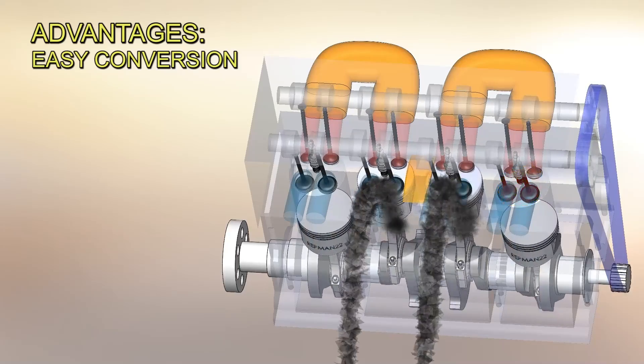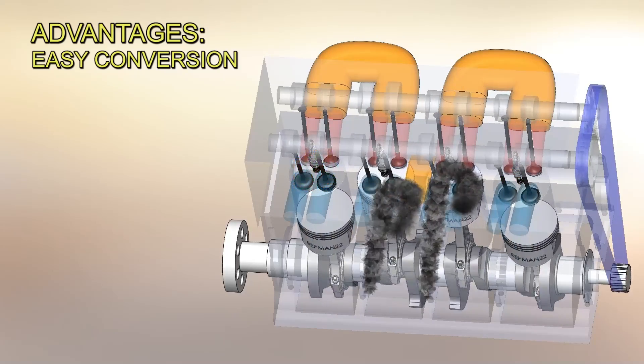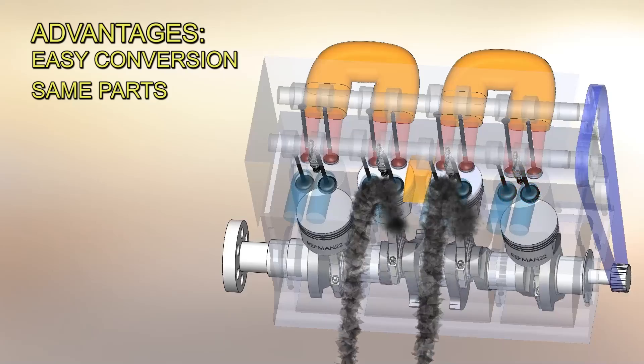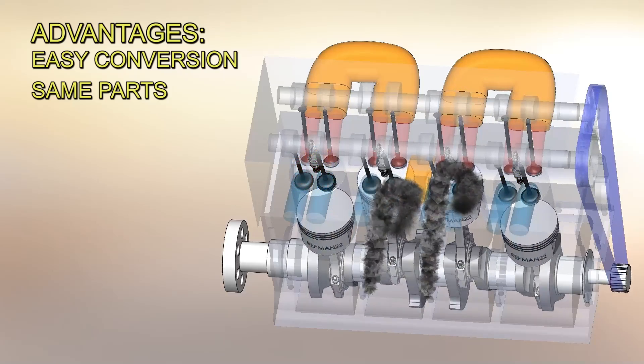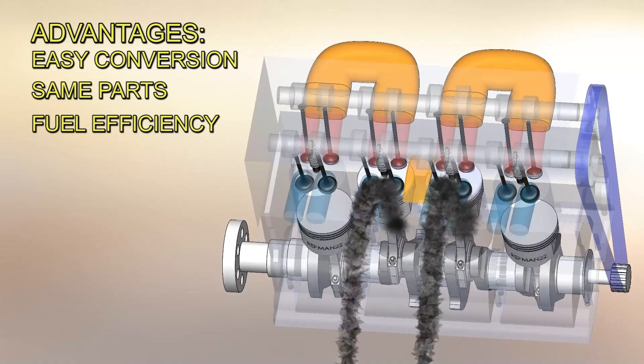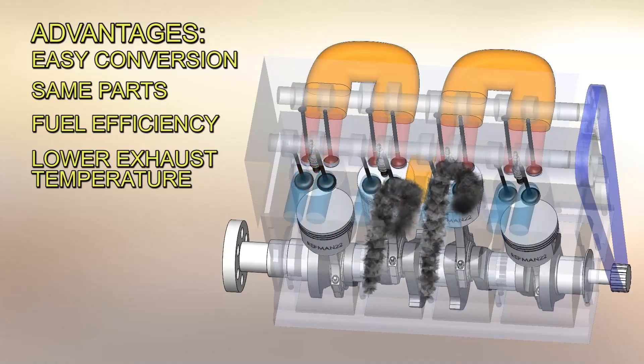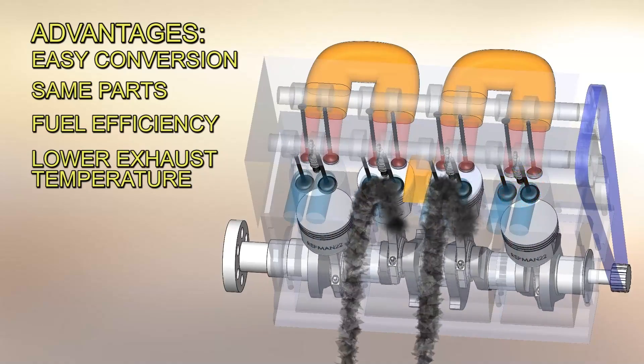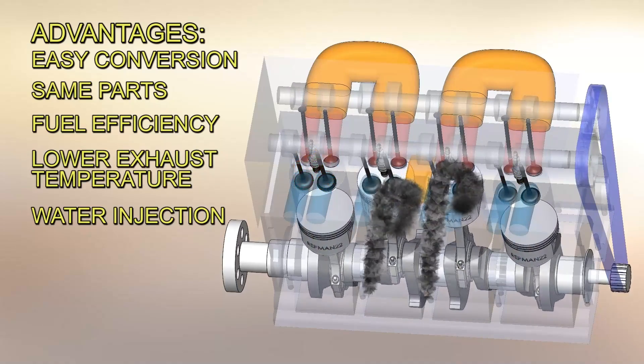On this opportunity, the university verified the following results. Advantages: Any car and engine can be converted to five strokes easily. It does not require special manufacturing systems and shares many parts. Increases fuel efficiency. Lowers the exhaust temperature as there is a second expansion cycle. Water injection can be used.